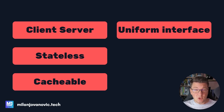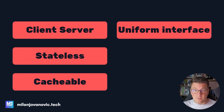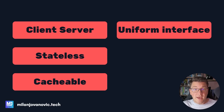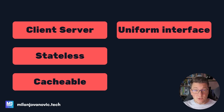The next constraint is probably the more interesting one, called the Uniform Interface Constraint. It actually consists of four guiding principles: identification of resources, manipulation of resources through representations, self-descriptive messages, and hypermedia as the engine of application state — also known as HATEOAS. I won't go into the details of these principles right now; we're going to discuss them in the practical part of this video.